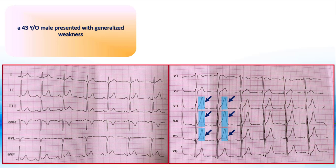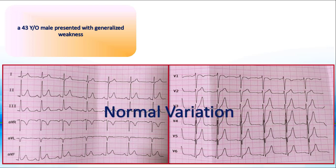Tall T waves are present in precordial leads. Here the upstroke is slower than the downstroke, therefore T waves are asymmetrical. They aren't peaked and no particular ST elevation or reciprocal changes are present, so normal variation is more probable in this case. Never forget that EKG findings aren't 100% sensitive and specific — therefore we must consider both acute ischemia and hyperkalemia as possible causes of weakness in this patient.